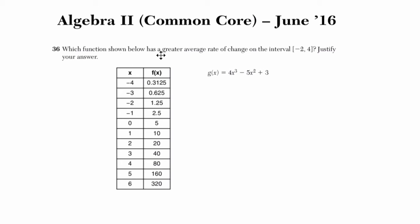All right, they want to know which function shown below has a greater average rate of change on the interval from negative 2 through 4, and they're using square brackets, so we are including negative 2 and 4. Justify your answer.